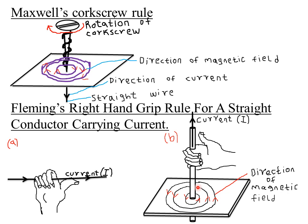As a student, you should be keen on how to apply the right-hand grip rule. We also have the left-hand grip rule which we will look at later. Always remember that when using the right-hand grip rule, use the right hand. You just align your thumb along the direction of the current, and the curling of the other fingers represents the direction of the magnetic field.